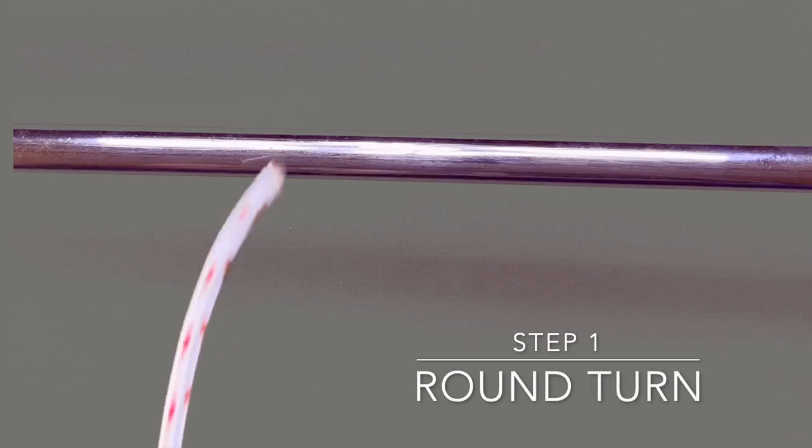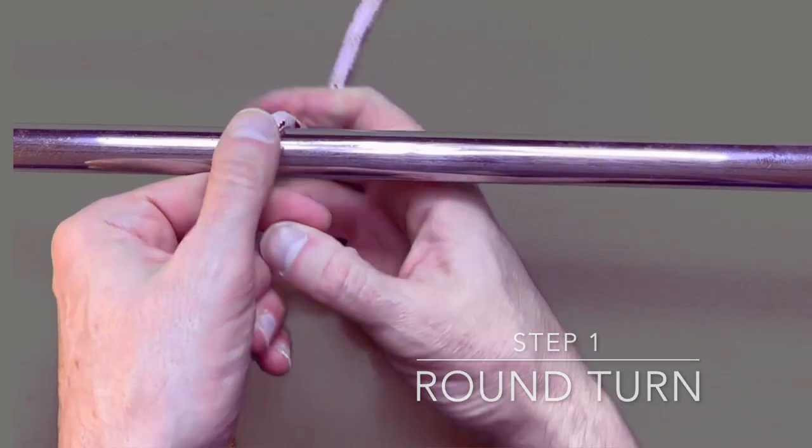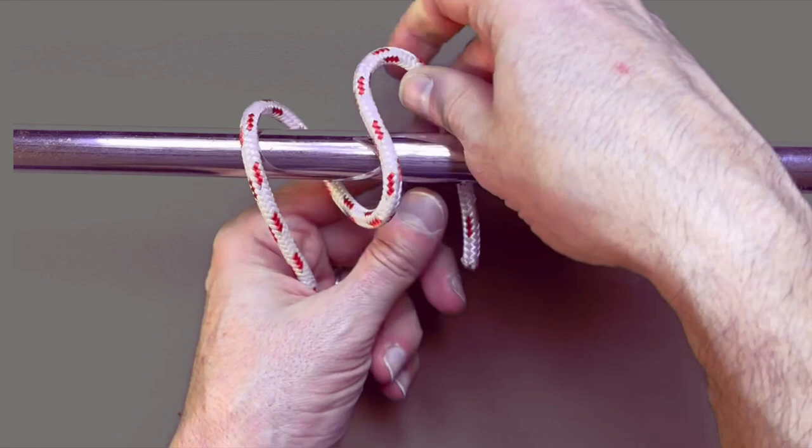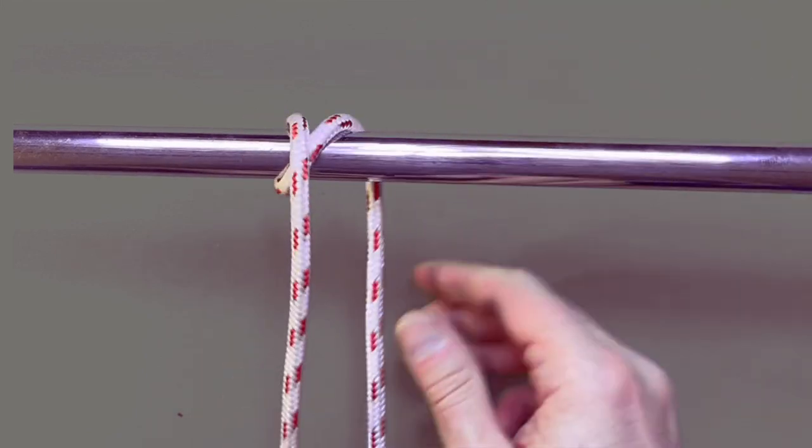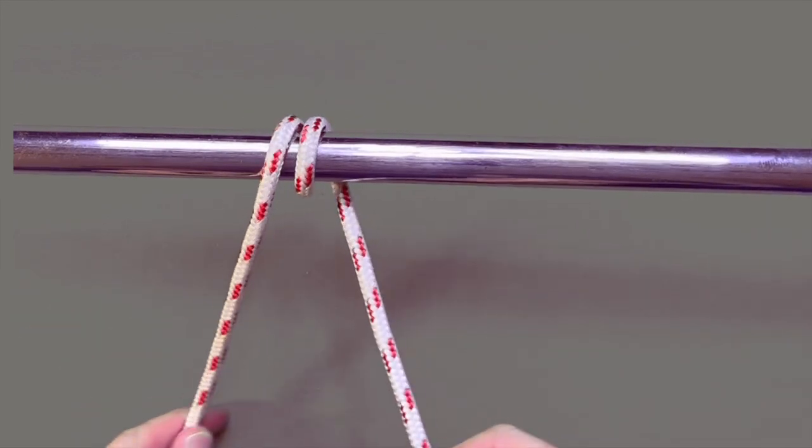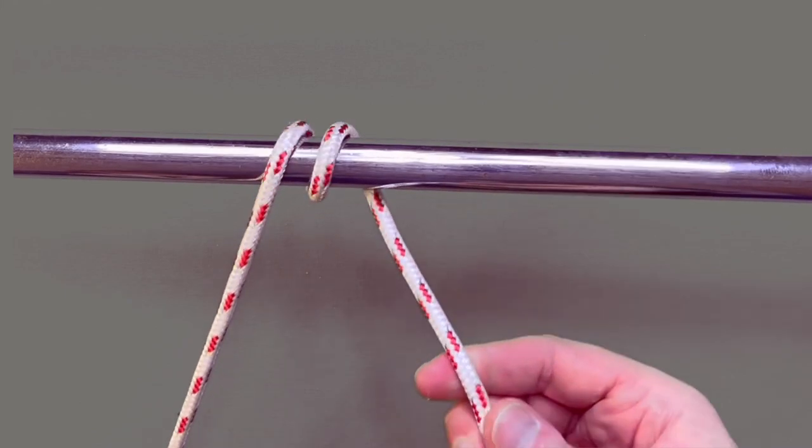Step one, you want to take the working end of your rope, wrapping it around your fixed object one and a half times to complete the round turn.